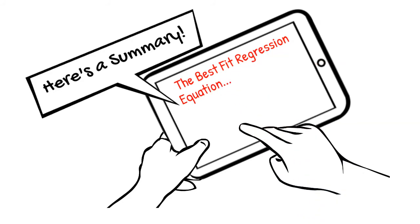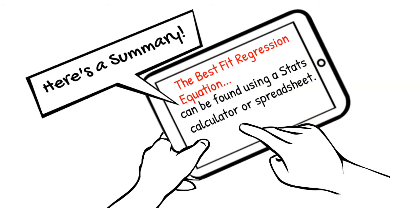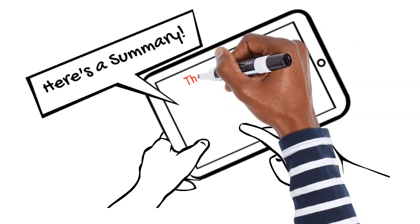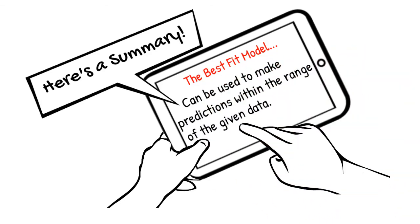The best fit regression equation can be found using a statistics calculator or spreadsheet. Slope tells us the change in y per x. The best fit model can be used to make predictions within the range of given data.